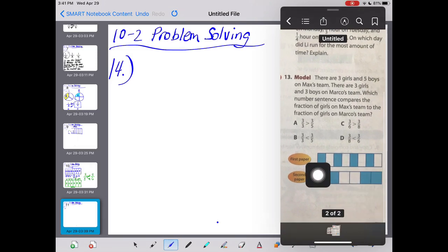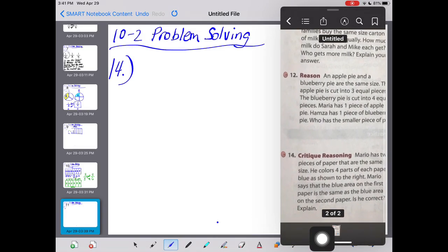He colors four parts of each paper blue as shown to the right, and that's right over here. So it looks like he has four sections here blue, and one, two, three, four sections blue here. He's got a little creative with where he was doing it. Mario says that the blue area on the first paper is the same as the blue area on the second paper. I guess meaning the same amount of space, the same size. Is he correct?